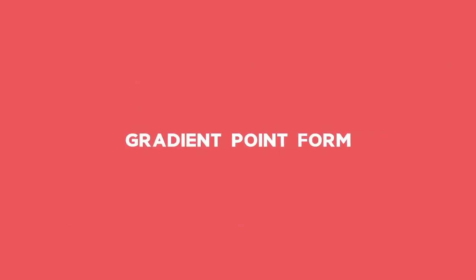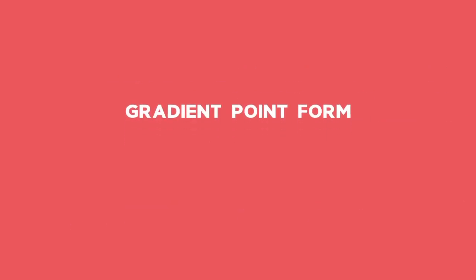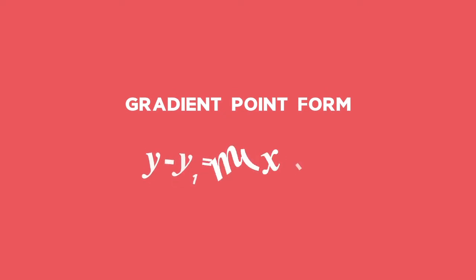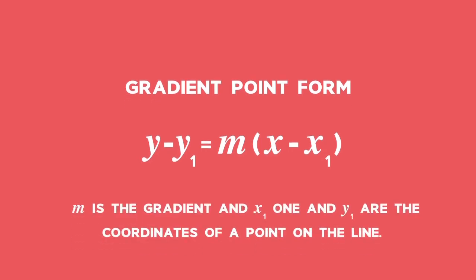The second one is the gradient-point form: y minus y1 equals m multiplied by the difference of x and x1, where m is the gradient and x1 and y1 are the coordinates of a point on the line.